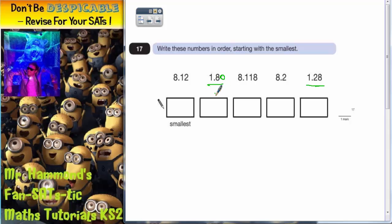Now if you think about money, one pound twenty-eight would be smaller than one pound eighty. So 1.28 is smaller than 1.80. So 1.28 is the smallest one.